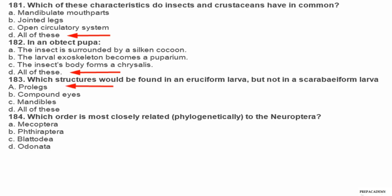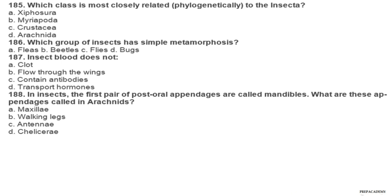Question 184. Which order is most closely related phylogenetically to the Neuroptera? A Mecoptera, B Trichoptera, C Blattodea, D Odonata. Question 185. Which class is most closely related phylogenetically to the Insecta? A Xiphosura, B Myriapoda, C Crustacea, D Arachnida.